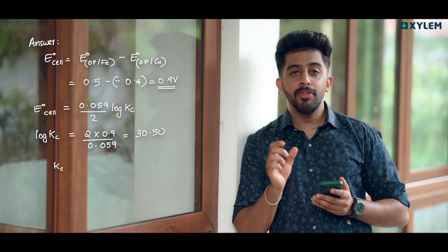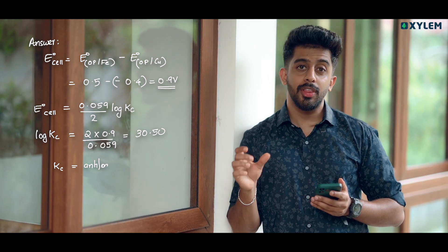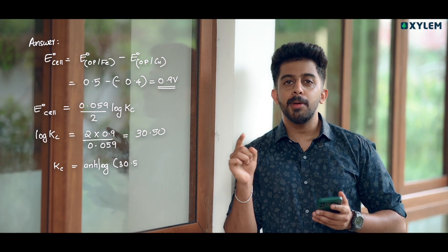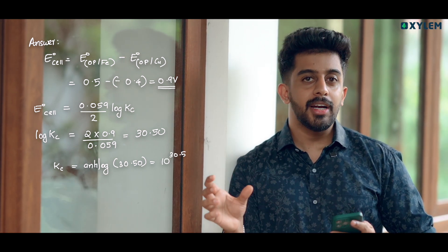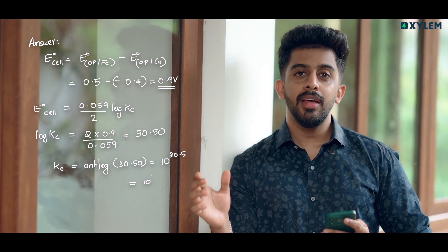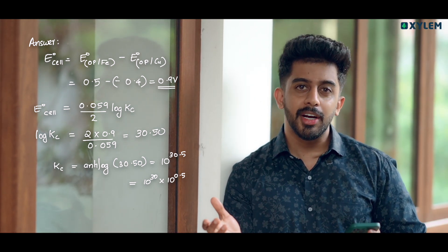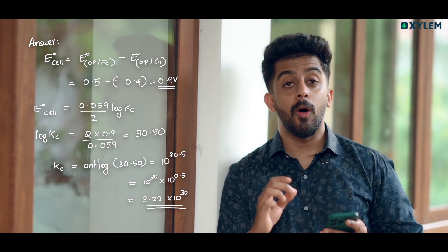We now have a value. The antilog of 30.50 gives us 10 to the power of 30.50. I'm going to separate it out — 10 to the power of 30.50.